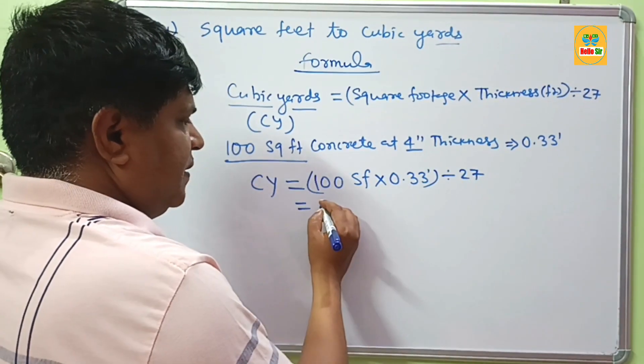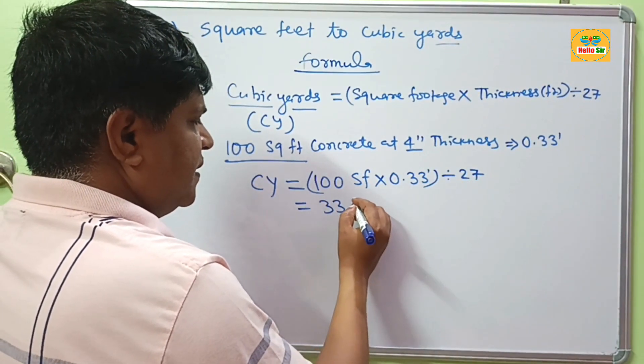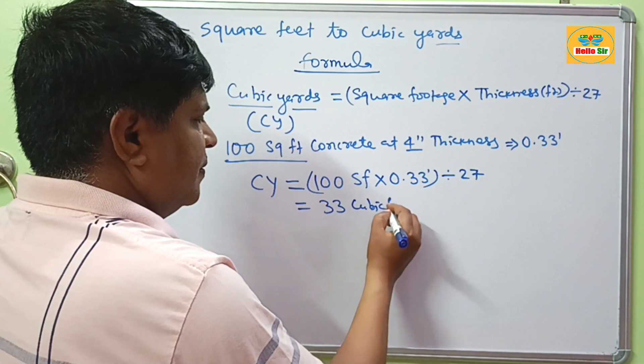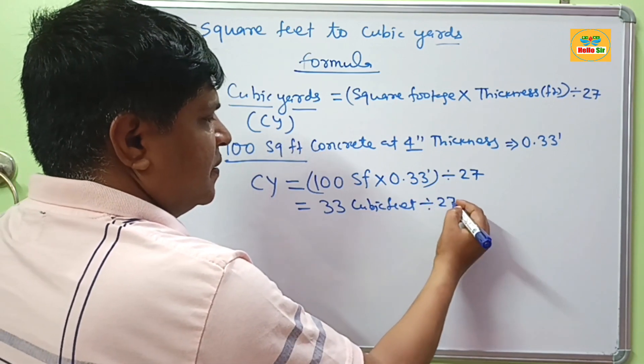It means it will be 33 cubic feet volume, divided by 27.